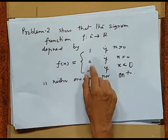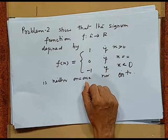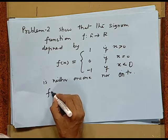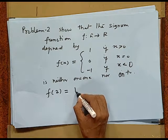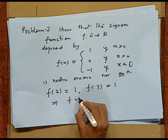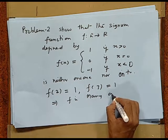We take one more problem: to show that the signum function defined from R to R by f(x) = 1 when x is positive, f(x) = 0 when x is zero, and f(x) = -1 when x is negative, is neither one-one nor onto. It means we have to show that the function is many-one and into. In this case, an example will suffice. We have f(2) = 1 and also f(3) = 1. This implies f is many-one, that is, it is not one-one.